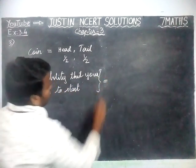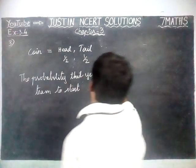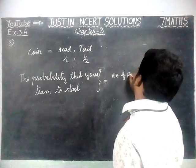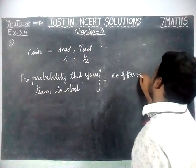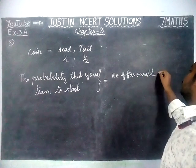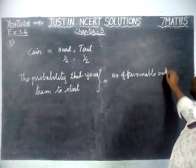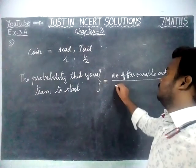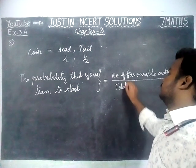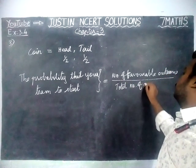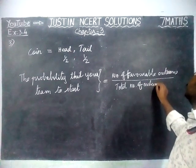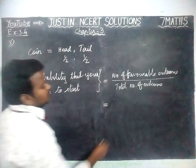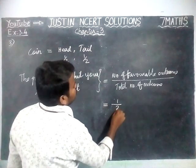The probability that your team will start is equal to the number of favorable outcomes divided by the total number of outcomes. Here, the number of favorable outcomes is 1, and the total number of outcomes is 2, so the answer is 1 by 2.